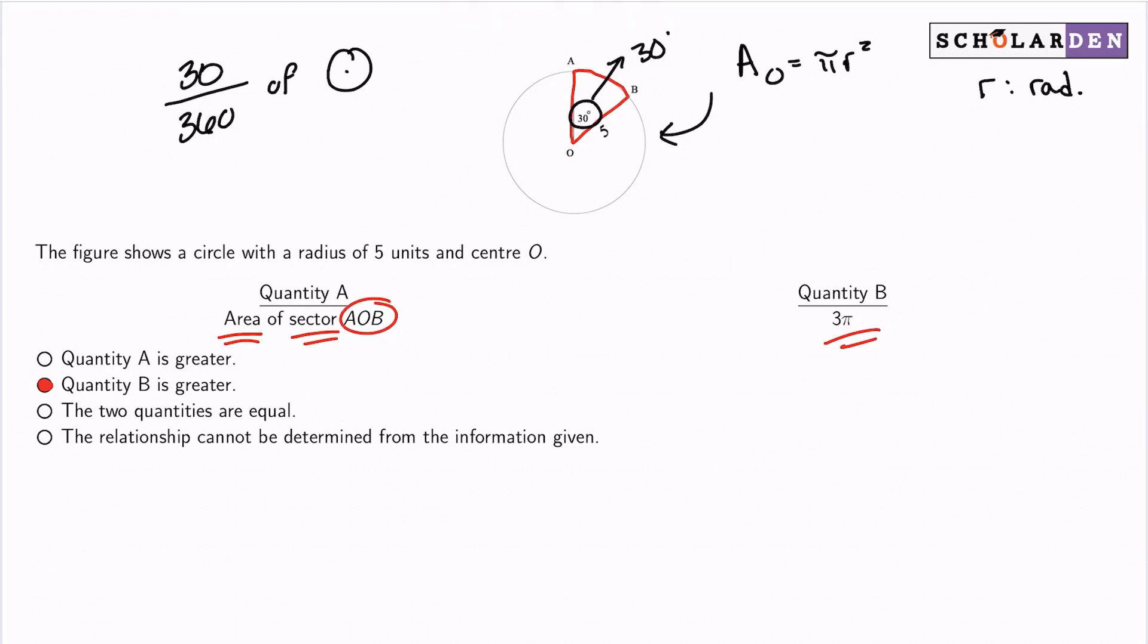So with that said, what we need to do here is multiply 30 out of 360 by that area. And just to simplify now, you can simplify 30 out of 360 into 1 over 12. And we're going to multiply that by the area of the circle.